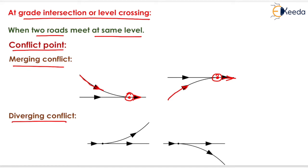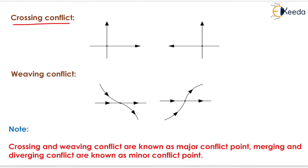The next type is the diverging conflict. If a vehicle tries to diverge from one route to another, one diverging conflict point arises. Similarly, another diverging conflict point arises in another direction. For crossing conflict, if two vehicles try to cross each other, crossing conflict points arise. For weaving conflict, when a vehicle merges from one direction and diverges from another, weaving conflict points arise.